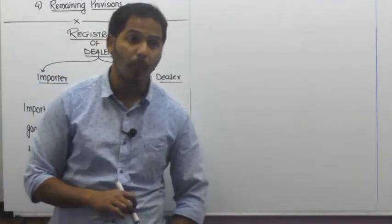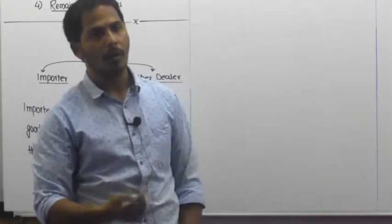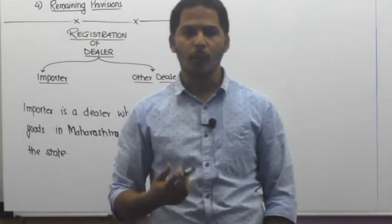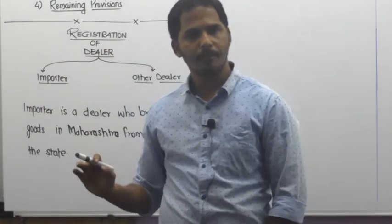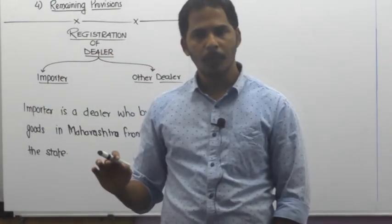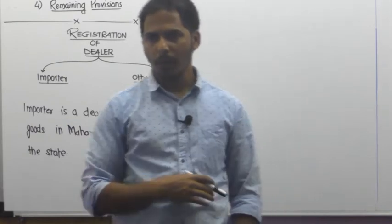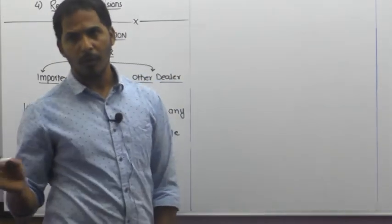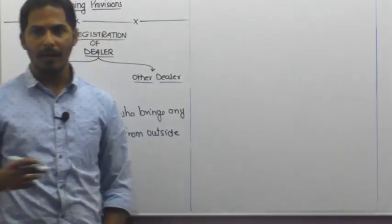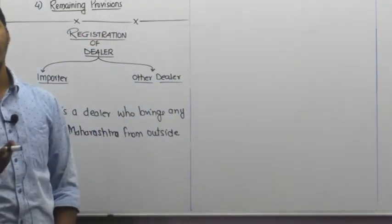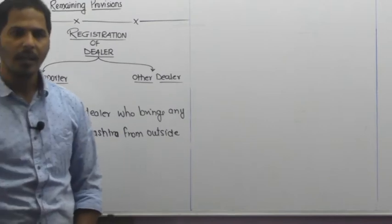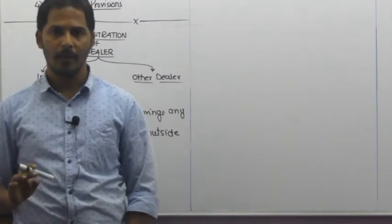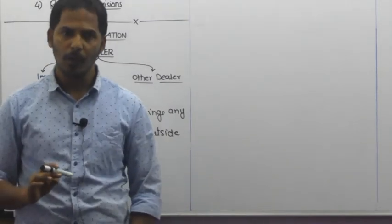So if a dealer brings any goods into Maharashtra from outside the state, that dealer is called an importer. And other dealer is one who does not purchase any goods from outside Maharashtra — such a dealer automatically becomes an other dealer. Are you clear?